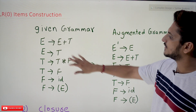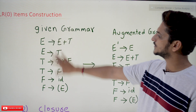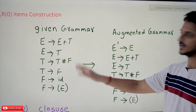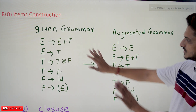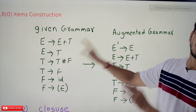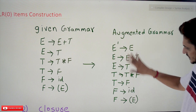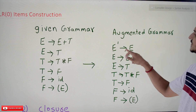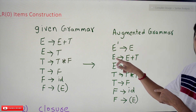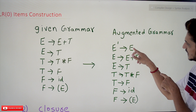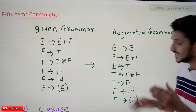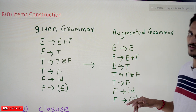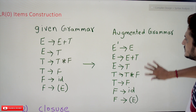This is the grammar we are using from our previous classes — the expression grammar that handles plus and star symbols with precedence and associativity. First, this grammar should be converted into augmented grammar. Augmented grammar means for the same grammar we add one extra production: E' → E, where E is the starting symbol. We will get clarity on why we need this extra production in a moment when we construct the states.